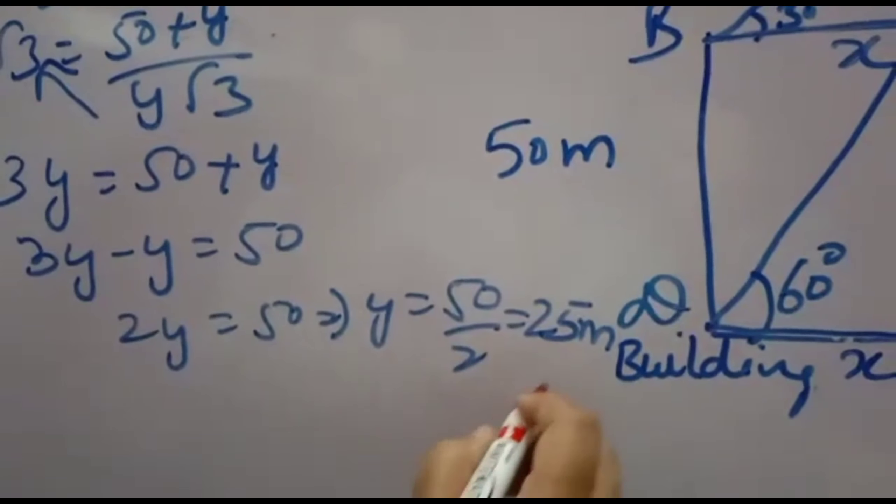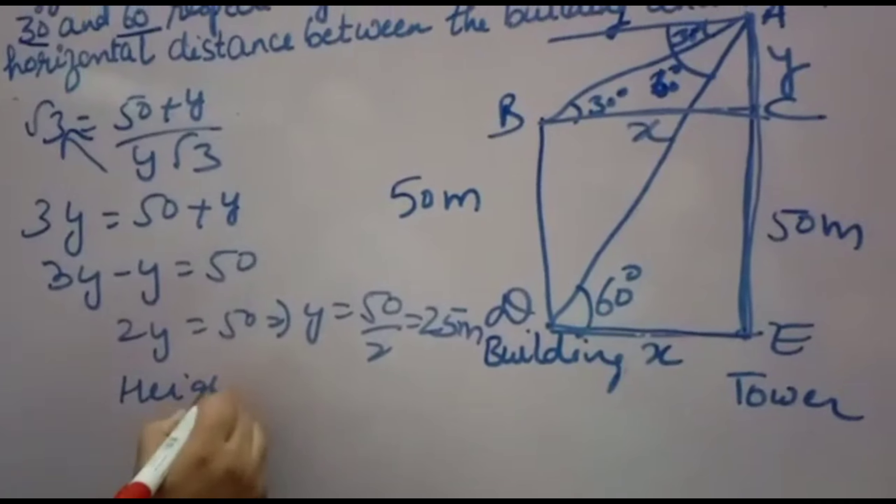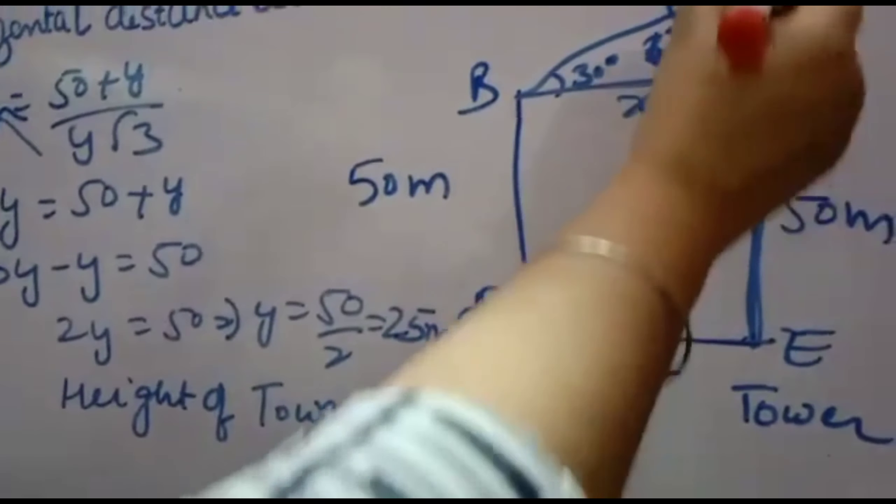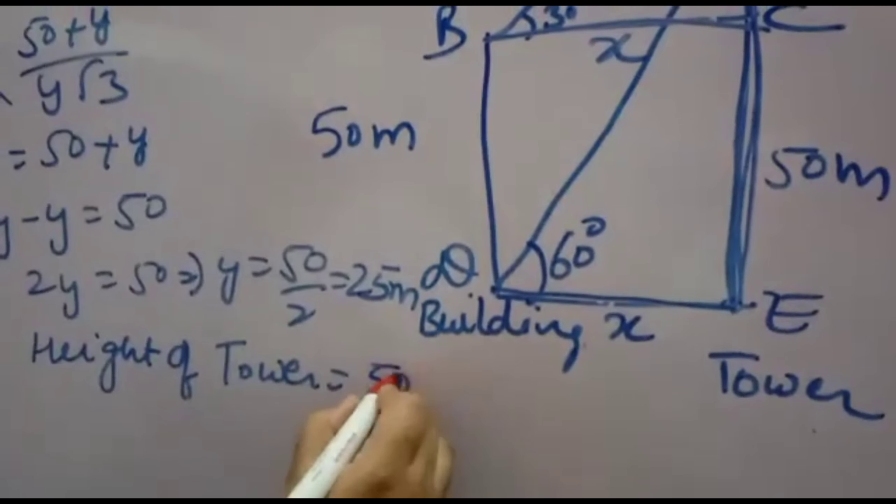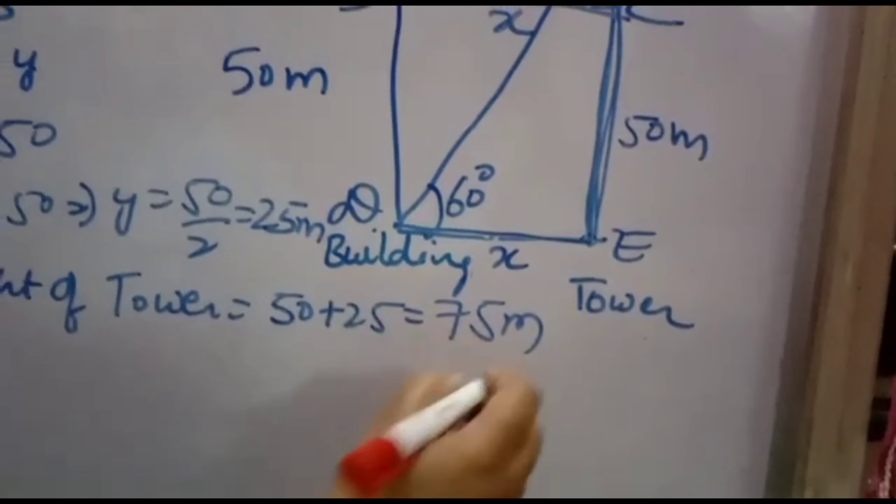Now 25 meter y came. Now total height. Height will come. Height of tower. Which you want. Because y came 25. And 50 also you have to add. So 50 plus 25 total will come 75 meter. This is the height of the tower.